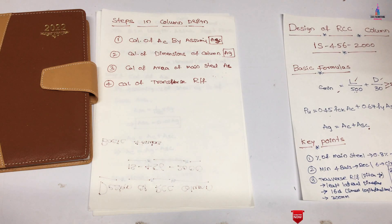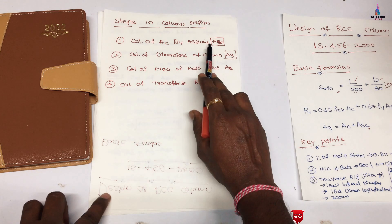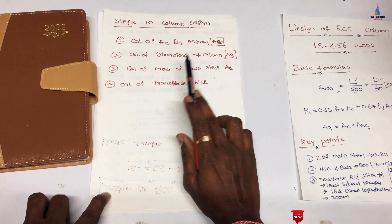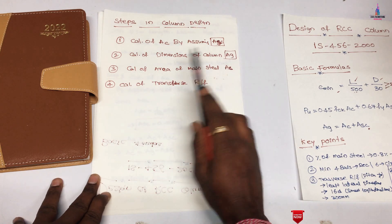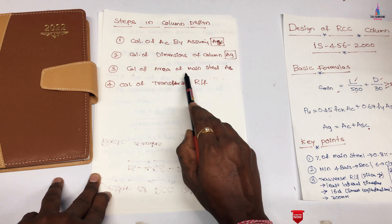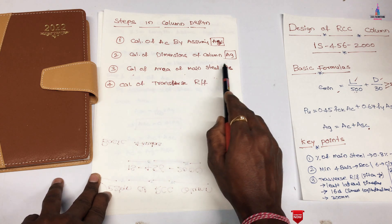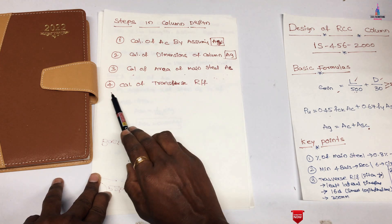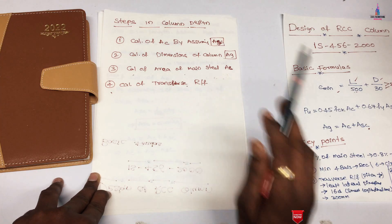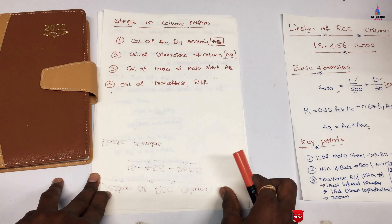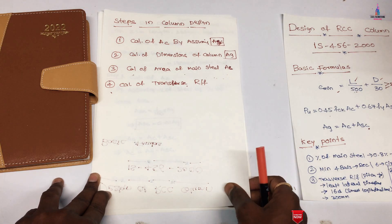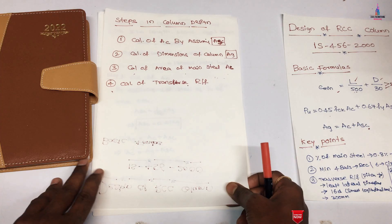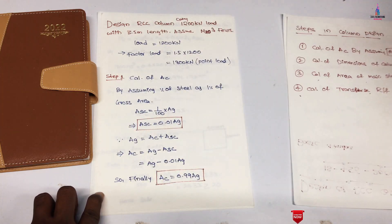The four steps in column design are: first, calculation of Ac using Ag; second, calculation of column dimensions using the gross area; third, calculation of area of main steel As; and fourth, calculation of transverse reinforcement.